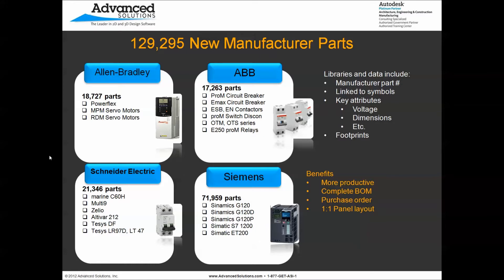Here within the slide you can see that there are over 129,000 new manufactured parts that have been added, with support for blocks and catalog entries specifically for the Allen Bradley, ABB, Schneider Electric, and Siemens catalogs. You'll also see the family names that have been updated, giving you a concise list of which libraries and catalogs have been updated within this latest release.